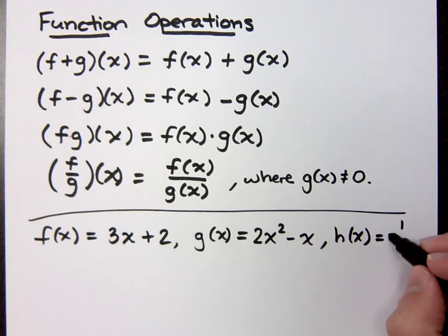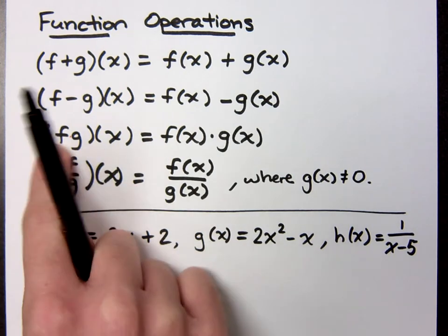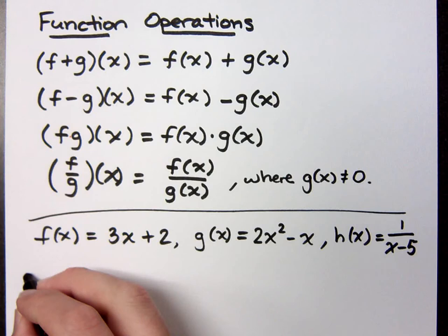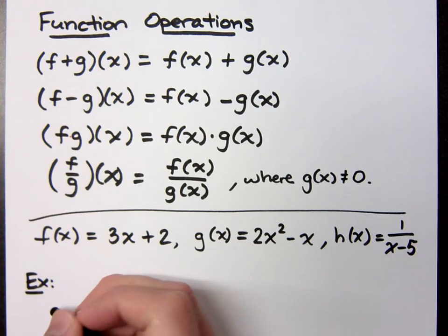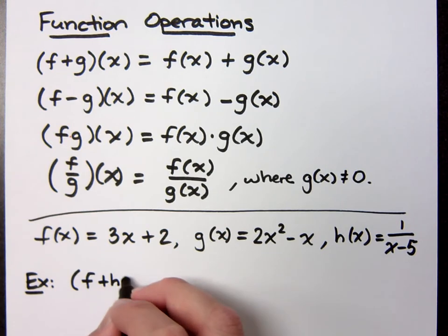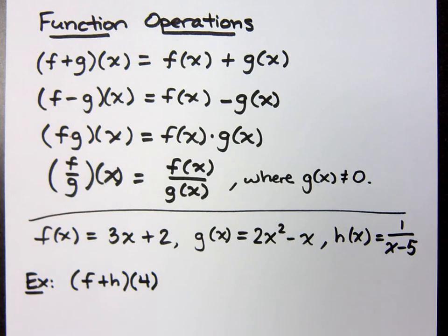And h of x is equal to 1 over x minus 5. I'm giving you three different functions now, so you know it's going to be good. This is just whatever two functions you are using, and the order that you have them is how you work them out, because not everything is just going to be f or g. Let me give you an example. If I ask you to evaluate f plus h of 4 — it's not times 4, it's of 4. This is your input value.